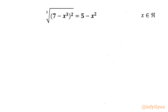Welcome back to InfiGyaan friends. Today in this video we are going to take up another challenging question from radical equations. It is: cube root of (7 minus x cubed) whole squared equal to 5 minus x squared. We have to find out all real solutions.